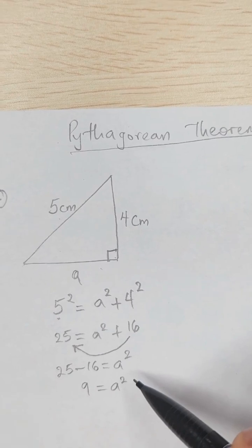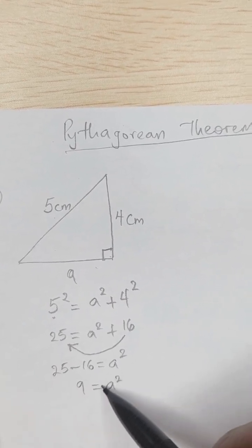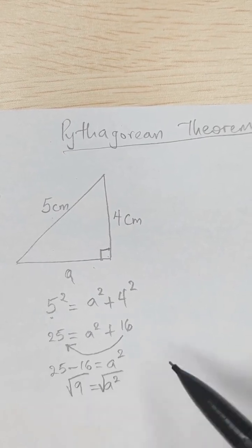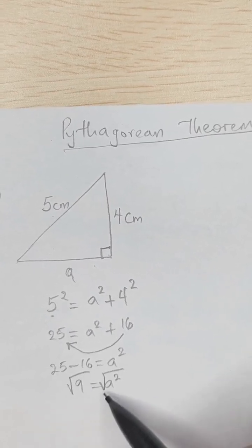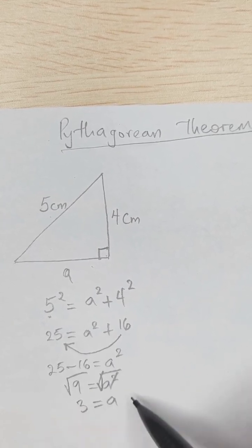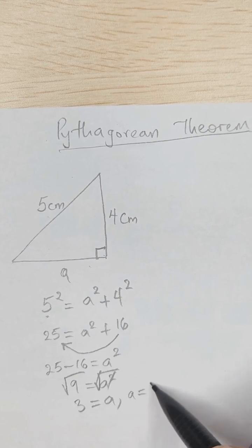Now if we take the square root of both sides, we have square root of 9, and this cancels out, so our a is equal to plus and minus 3.